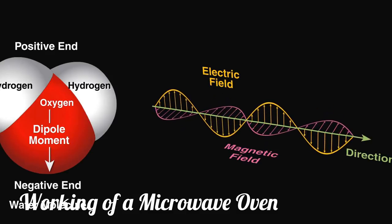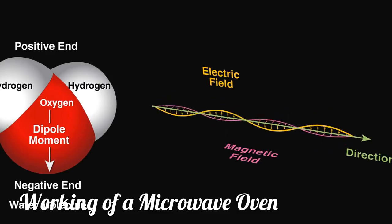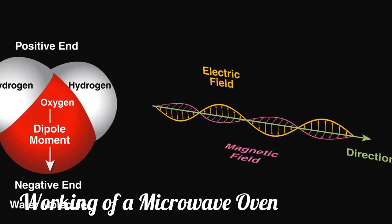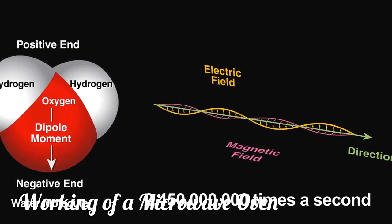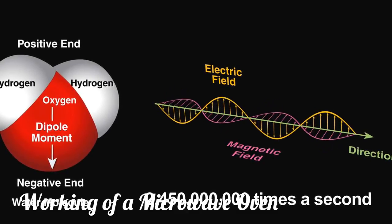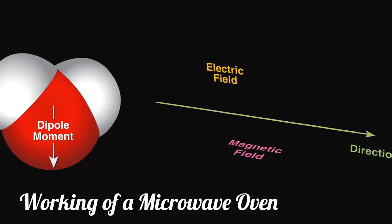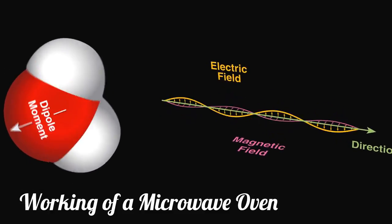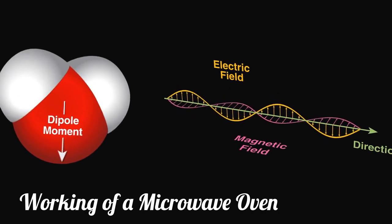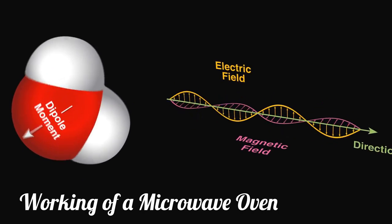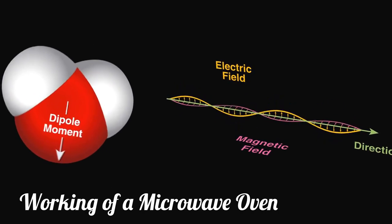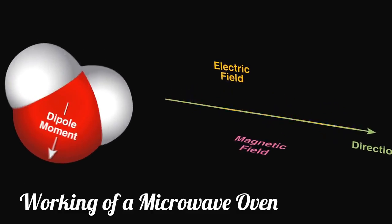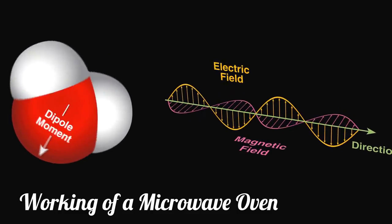By definition, the waves have electrical and magnetic fields that change direction rapidly. For this oven, the direction of the fields changes 2.45 billion times per second. Water will try to align with the radiation's electric field. The changing field rocks the water molecules back and forth rapidly, and molecular friction from this creates heat, as the motion disrupts the hydrogen bonds between neighboring water molecules.